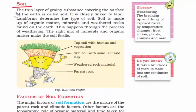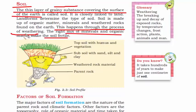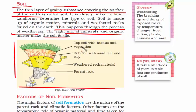Soil is the thin layer of grainy substance covering the surface of the earth — the grainy substance refers to small debris of rock. Soil is formed through a process known as weathering, and for fertile soil, you need the right mixture of minerals and organic matter. The soil profile from top to bottom includes: plant/crop layer, then a layer of humus (dead, decayed matter of plants and animals), then subsoil with sand, silt, and clay, then weathered rock material (small pieces of rocks), and finally the parent rock — a huge chunk of rock at the bottom.